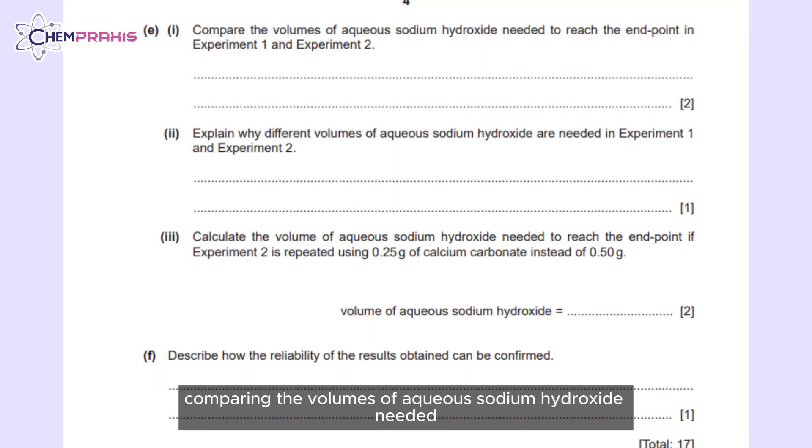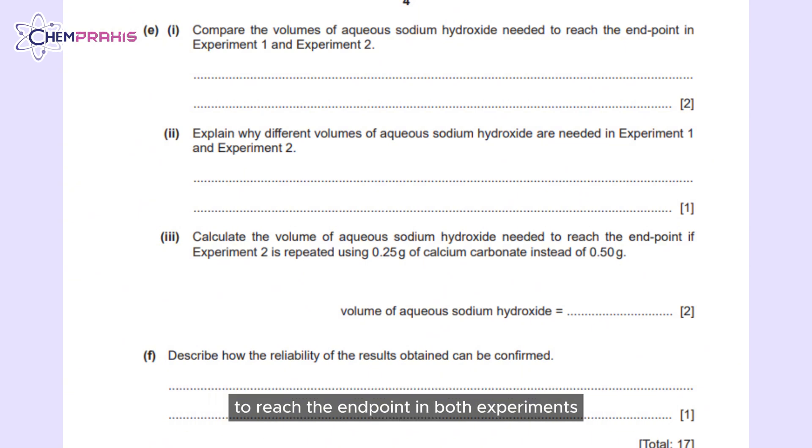Comparing the volumes of aqueous sodium hydroxide needed to reach the end point in both experiments, the volume in experiment 1 is higher than experiment 2, and this is because both required different amounts of aqueous sodium hydroxide to neutralise it. Don't forget to repeat the experiment so that more accurate results can be achieved.